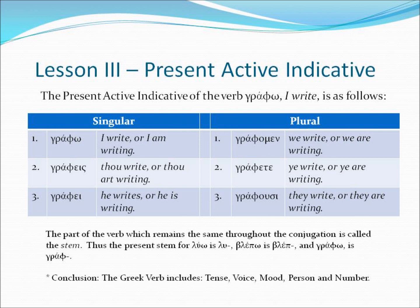The part of the verb which remains the same throughout the conjugation is called the stem. Thus the present stem for luo is lu, blepo is blep, and grapho is graf. The Greek verb includes tense, voice, mood, person, and number. You'll also notice the distinction between second person singular and second person plural — we use the King James wording because it's more distinct. In modern English, 'you write' could mean singular or plural. So we differentiate by using thou write for second person singular versus ye write for second person plural.